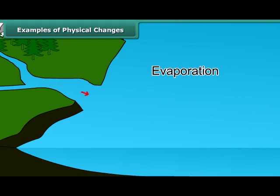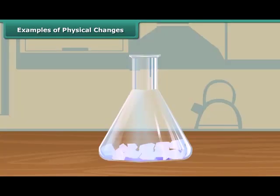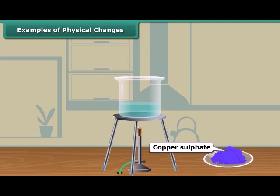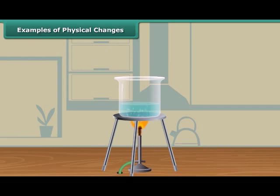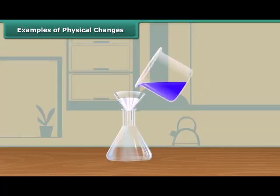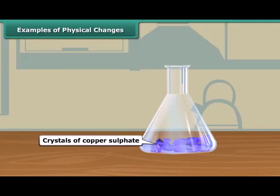Salt can be obtained by the evaporation of seawater, but the salt obtained in this manner is not pure. Pure crystals of salt can be obtained by crystallization. To prepare pure crystals of copper sulfate, take about 100 milliliters of water in a beaker, acidify the water with a few drops of dilute sulfuric acid, and heat the water. When it starts boiling, add copper sulfate powder slowly with continuous stirring until a saturated solution is obtained. Filter the solution and allow it to cool. After some time, you will see blue colored shining crystals of copper sulfate in the solution.